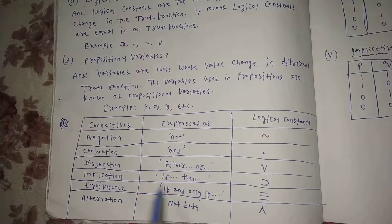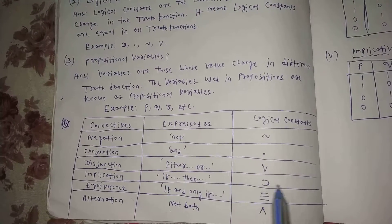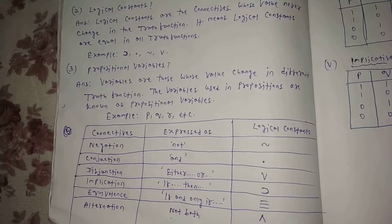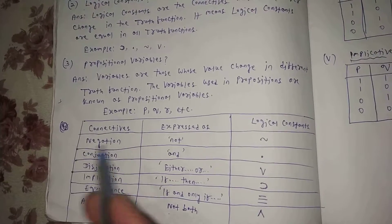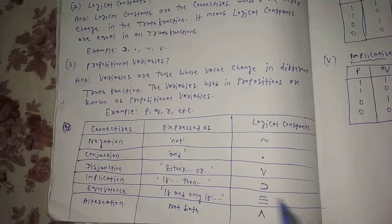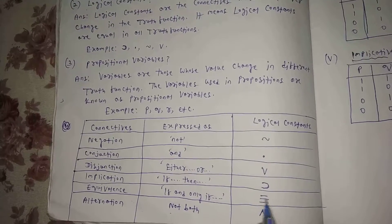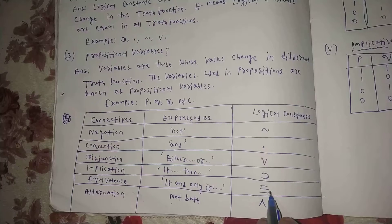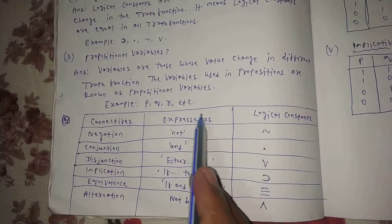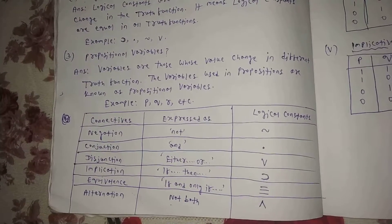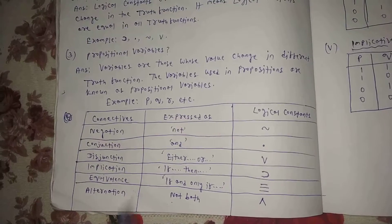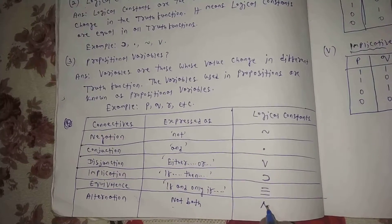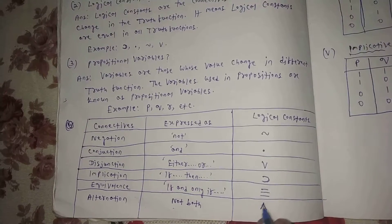Implication is expressed as 'if…then,' and its mark is the horseshoe symbol. Equivalence is expressed as 'if and only if,' and its mark is three parallel lines. Alternation is expressed as 'not both,' and its logical constant is the dagger symbol.